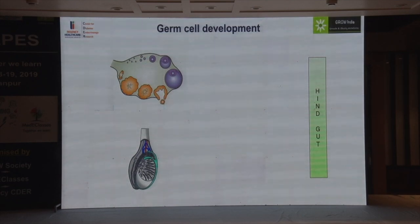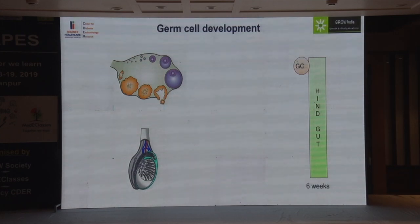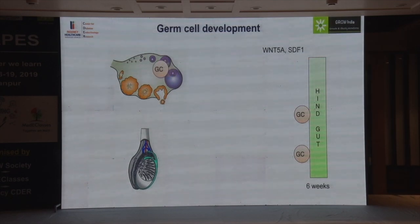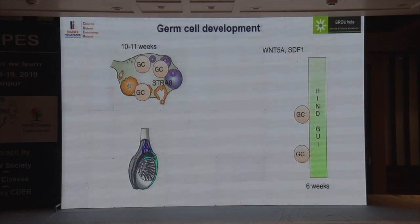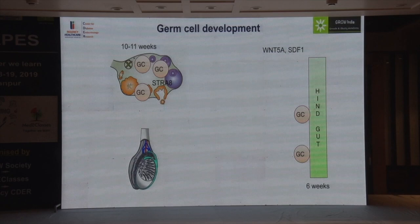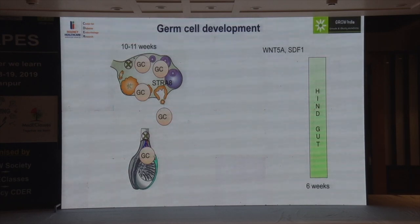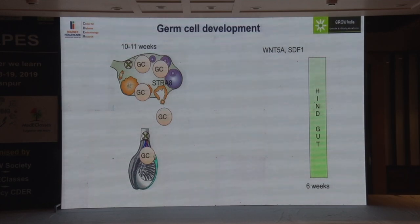Germ cells come from the coelomic epithelium at six weeks, migrate, and become localized at the level of the ovaries by ten to eleven weeks. They then remain in a resting state and start producing follicles towards term. The ovary is a quiescent organ during the fetal period, while the testis is very active. You need an active fetal testis to produce a boy; you do not need an active ovary to produce a girl.